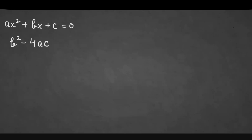If b² - 4ac is equal to zero, then we can say the equation has two equal roots.